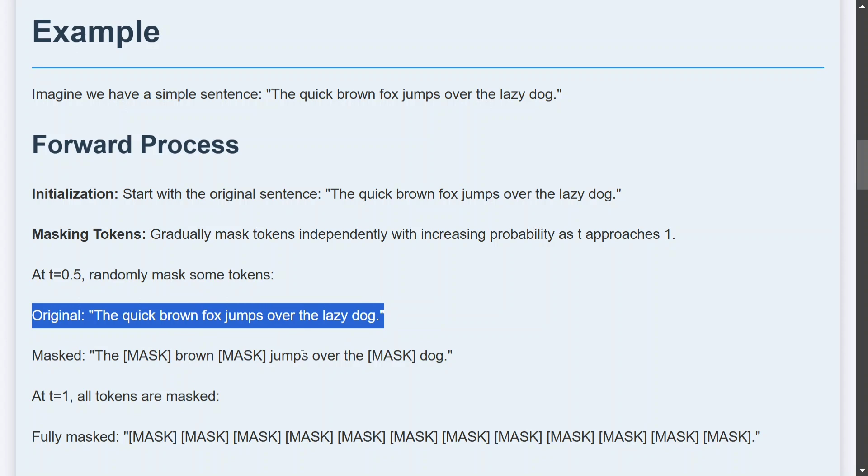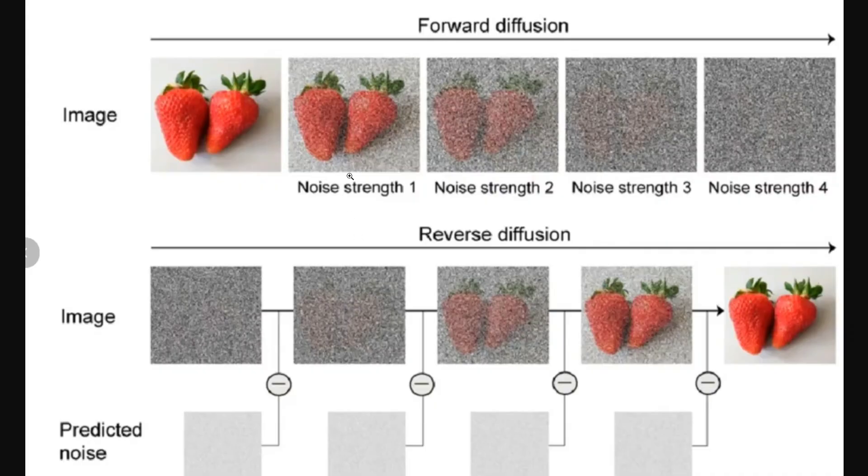As time progresses, if you go back to the previous image, assume this to be t=0.1 to t=0.2, t=0.3, and the last is t equals to 1, where the image is completely distorted. Similarly, in case of text, instead of adding noise we are adding mask.